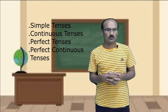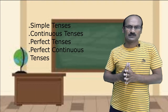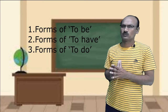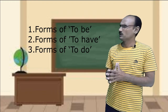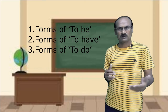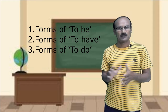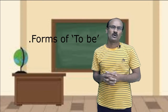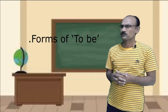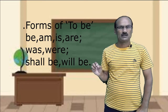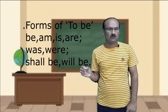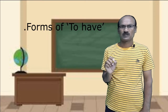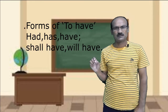Tenses mainly involve forms of to be and forms of to do. We are starting our English speaking course from forms of to be. Forms of to be means: am, is, are, was, were, shall be, will be. Next in the list is forms of to have: have, has, had, shall have.